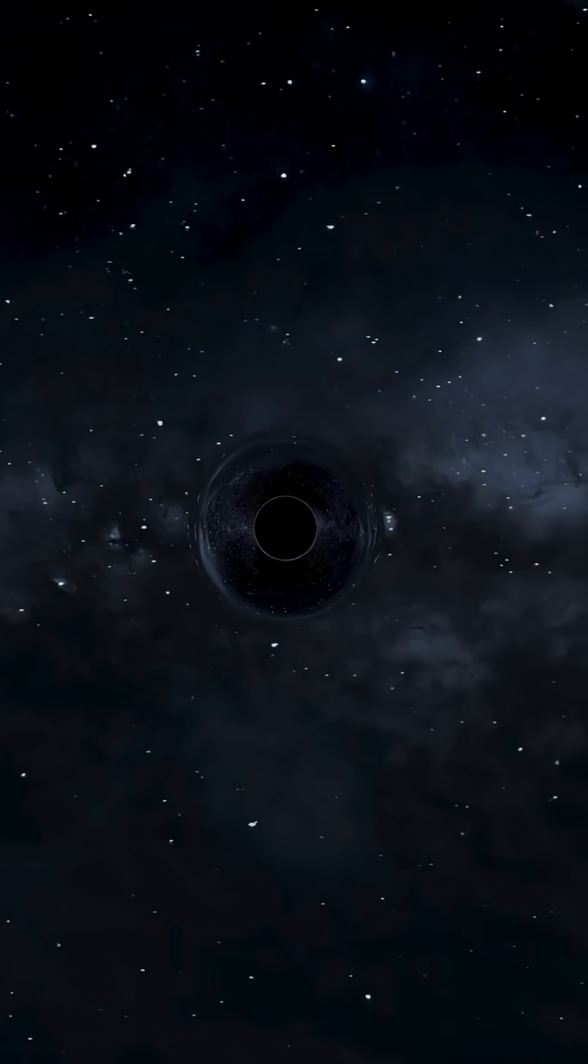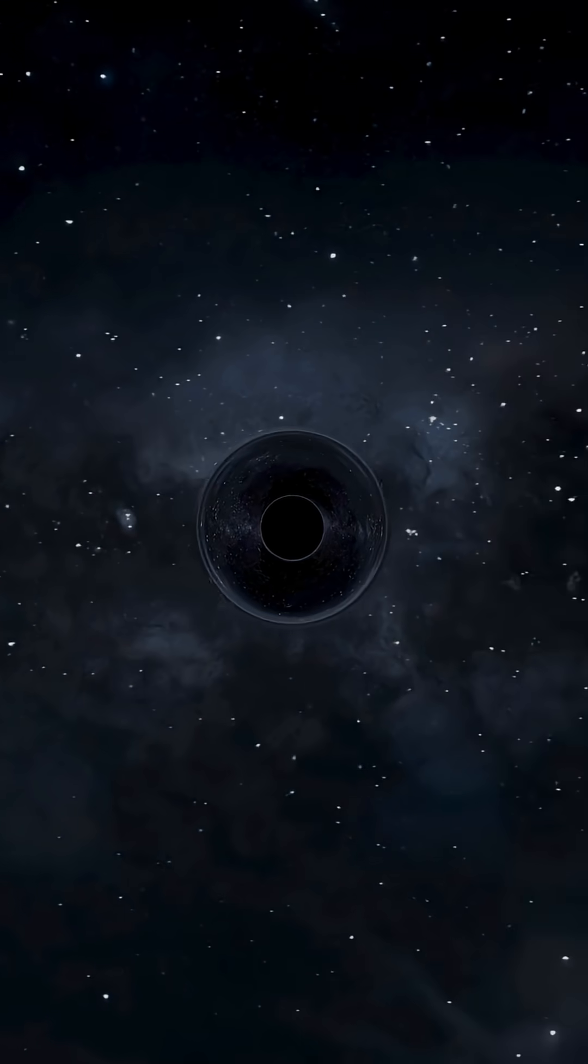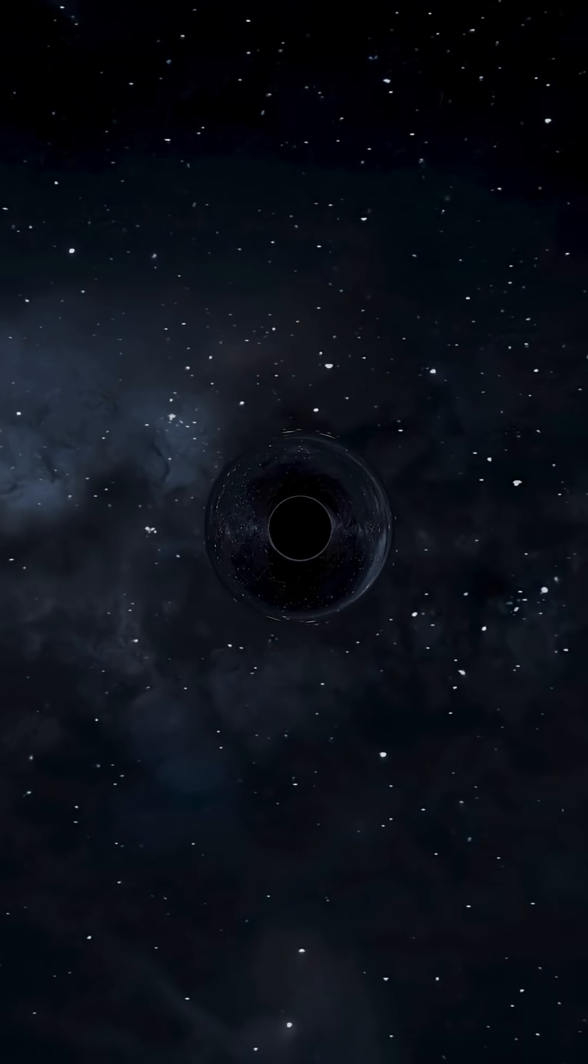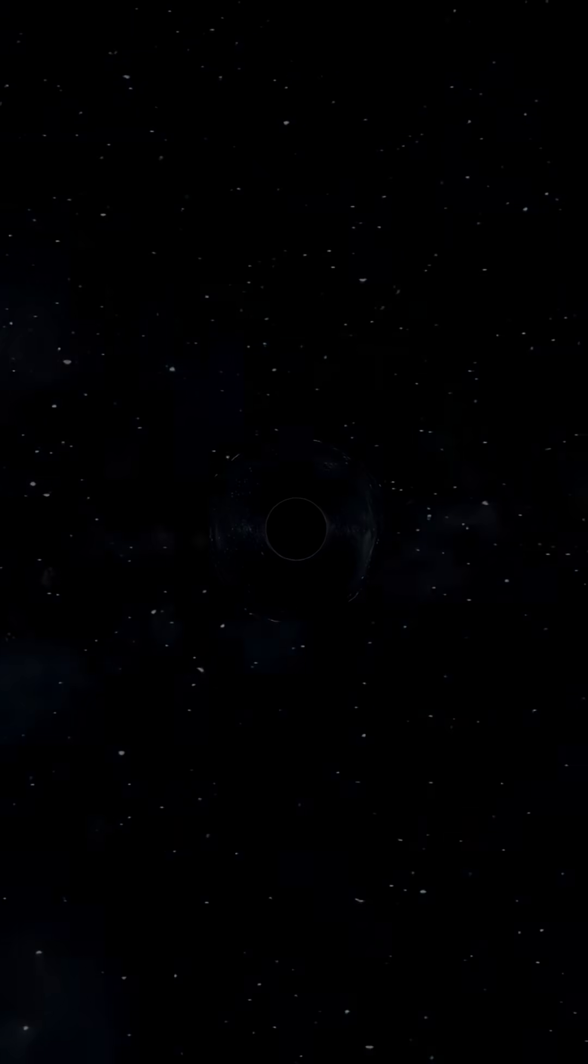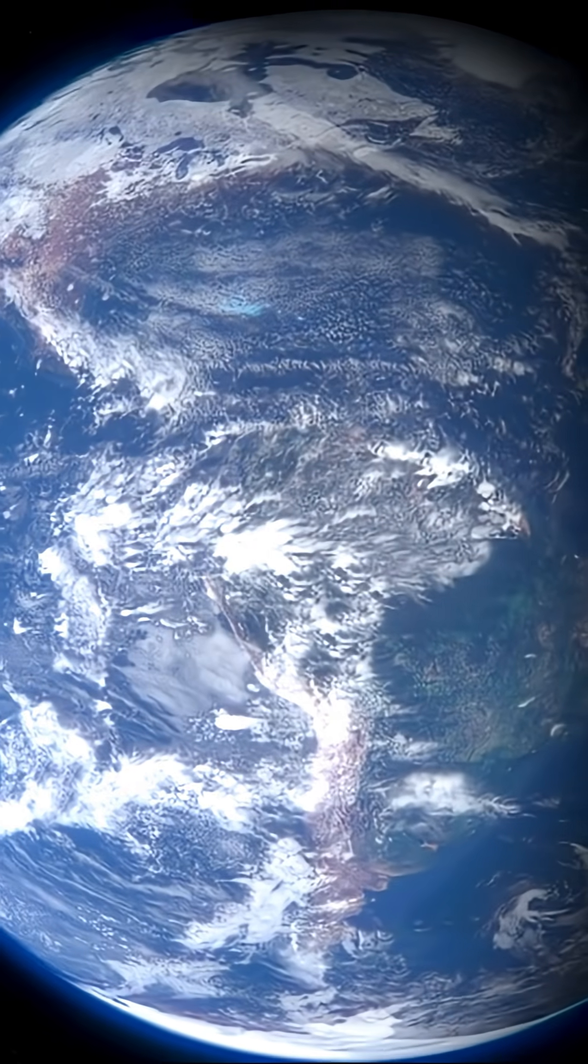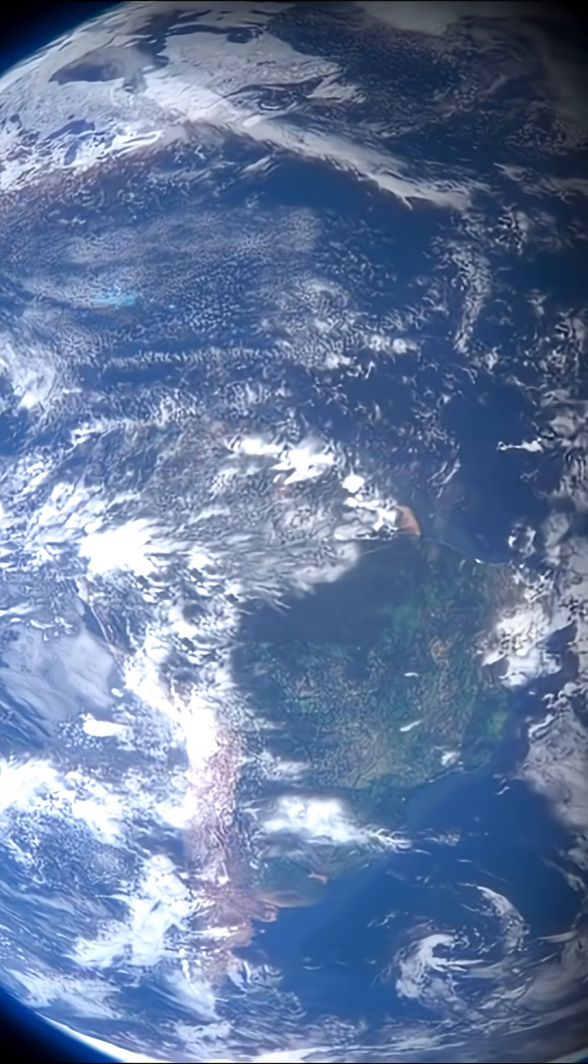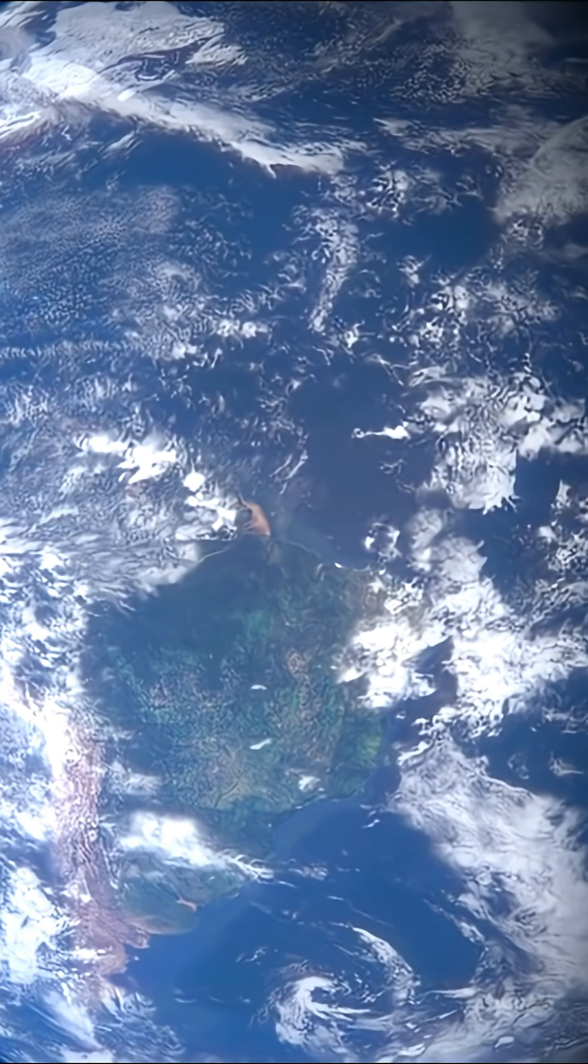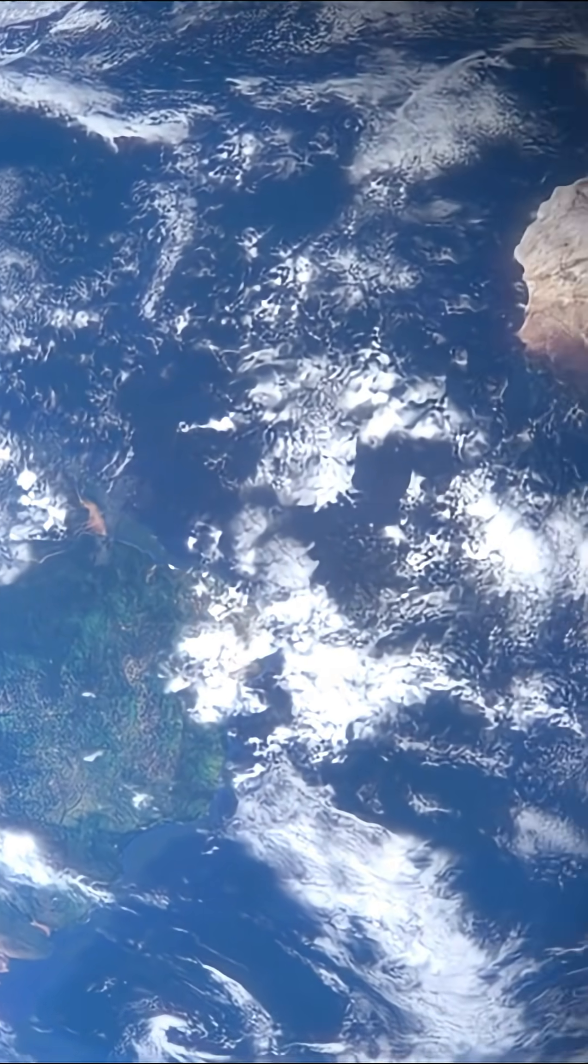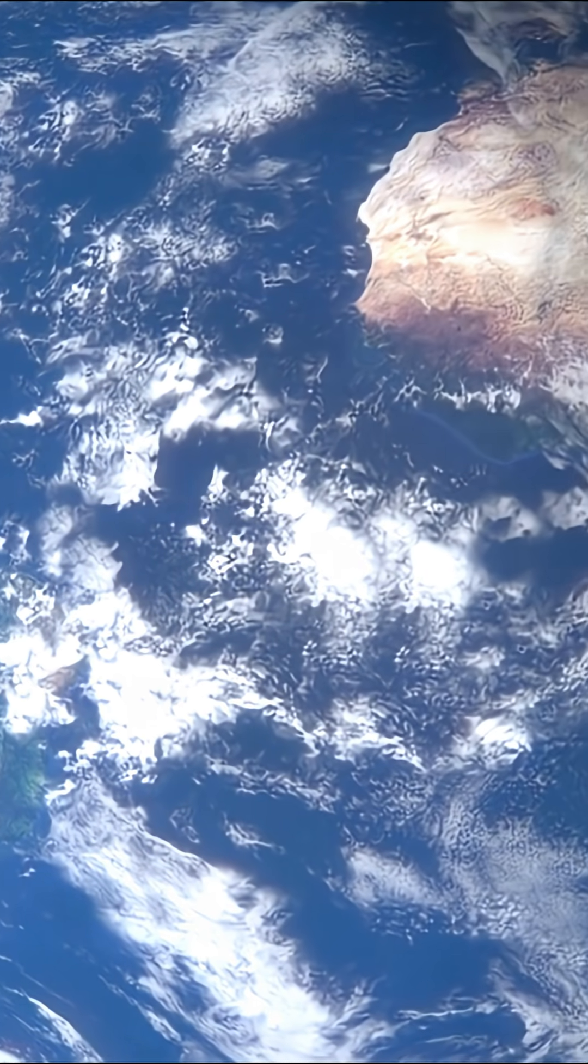Turning anything into a black hole is simple, but brutal. Just squeeze its entire mass inside its Schwarzschild radius. For Earth's mass, that's a 6 followed by 24 zeros in kilograms. The required radius is just 8.9 millimeters, smaller than a marble.